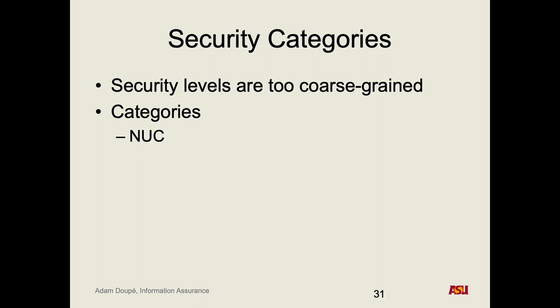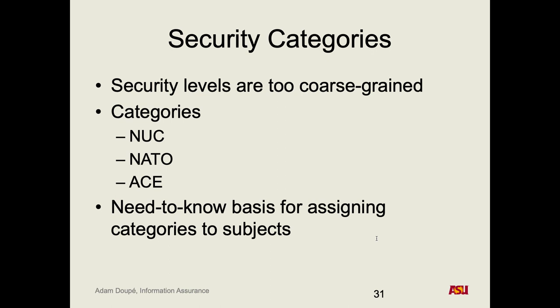Some example categories include NUKE (related to nuclear stuff), NATO, and ACE. The idea is we can assign both subjects and objects to zero or more categories, and that defines what type of access they can get. Our high-level policy goal remains: we don't want information at a higher security level to leak to somebody with a lower level. Additionally, objects in a specific category should only be accessed by people who have that category.